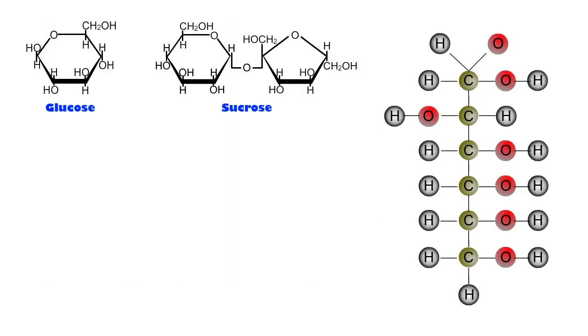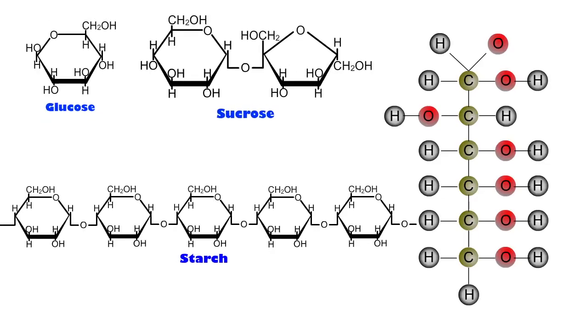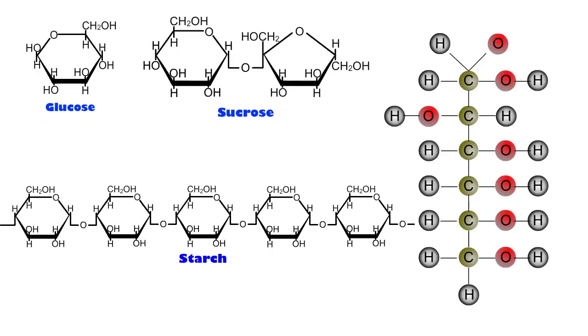Carbohydrates are classified according to molecular size and solubility. In general, the smaller molecules are more soluble than the larger ones.